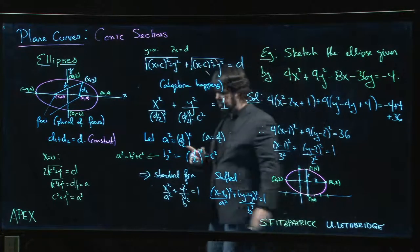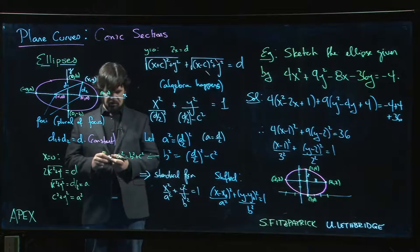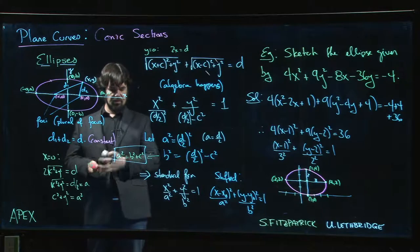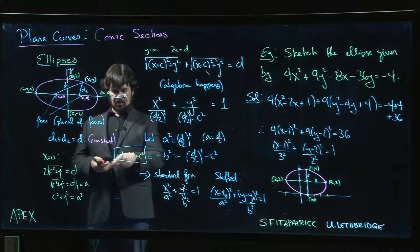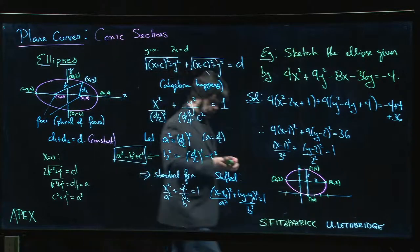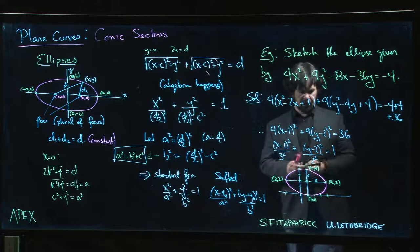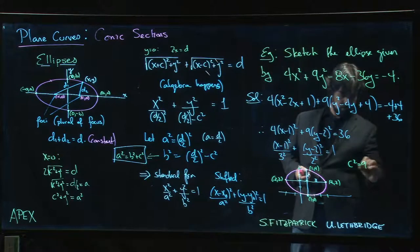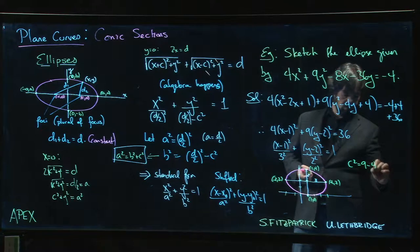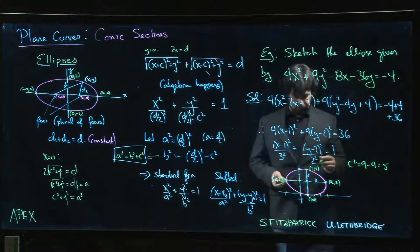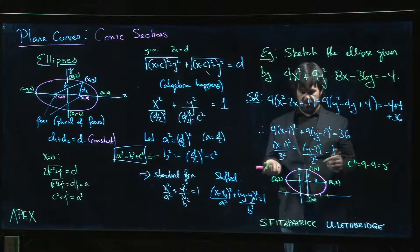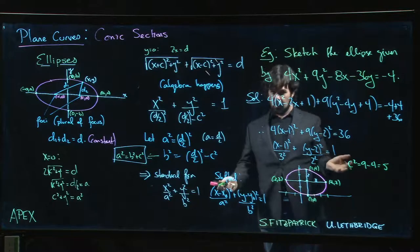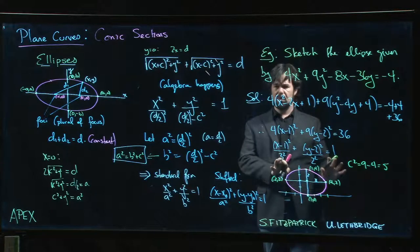If we wanted to indicate the focus, we actually know how to get the focus because we have this equation here, right? a squared is equal to b squared plus c squared, so c squared is a squared minus b squared, which is 4... is 5. So c is plus or minus root 5, so we can then go to 1 plus root 5 and 1 minus root 5 if we wanted to plot the two foci, but I think we'll leave it like that.